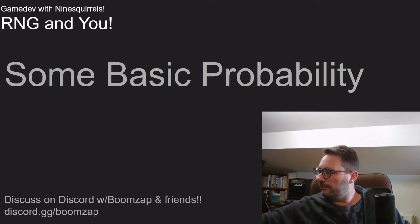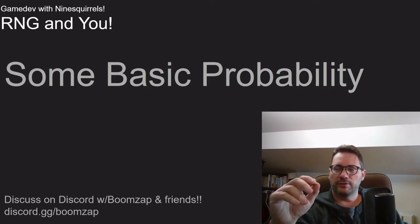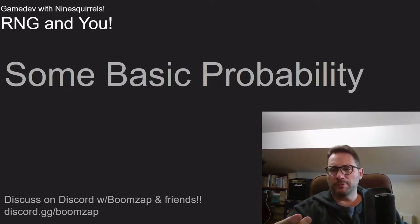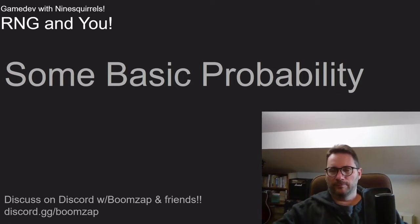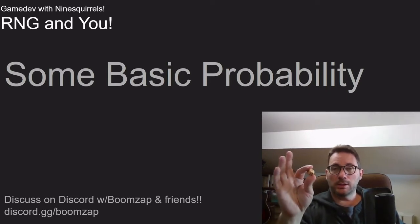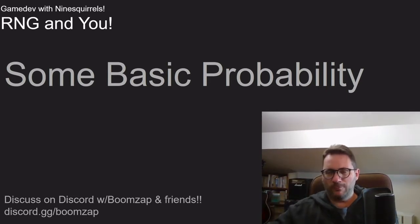Let's pull out a simple six-sided die. This is your most basic kind of probability. A coin is a 50/50 chance; a die is a one-in-six chance. You can represent that as a decimal, fraction, or however you want. This is a one-in-six chance of something happening — your basic form of randomness. So a weapon that does one to six damage would be represented by one die.